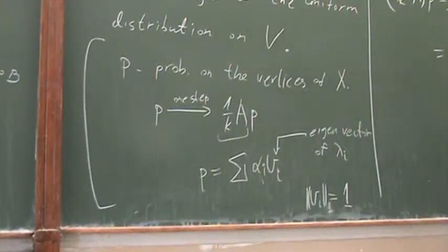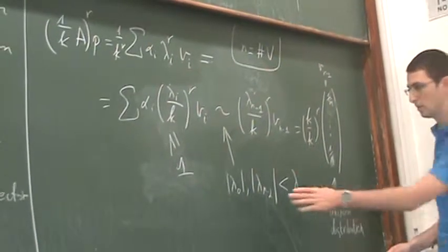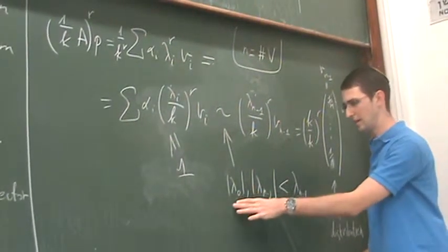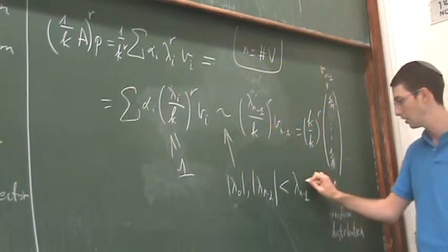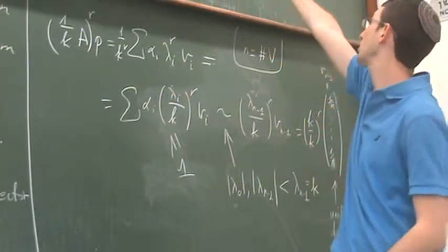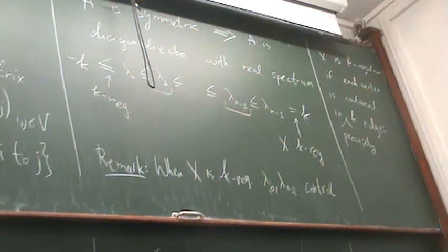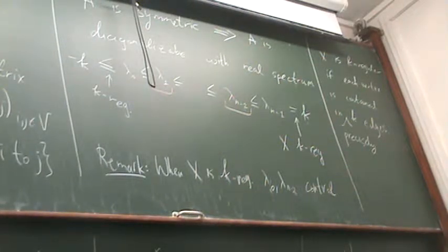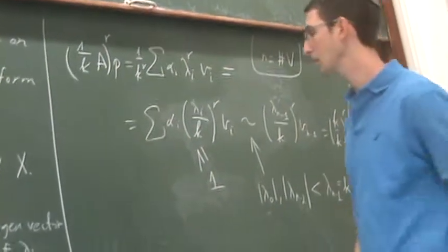The faster λ_0 and λ_{n-2} are smaller than λ_{n-1} = k, the faster you converge to the uniform distribution. This hints that the spectrum might be related to being an expander in the sense of the Cheeger constant - when you converge fast to uniform, it means there is a lot of connectivity in the graph.